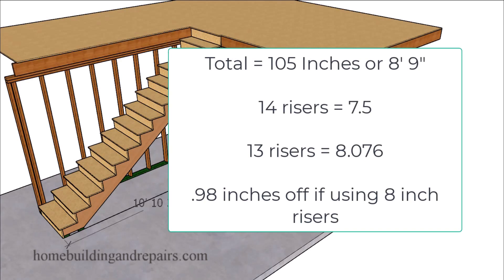I've had this happen to me plenty of times when I was building stairs for large track home builders who needed to make these measurements work even when they didn't. For those who understand enough math: if we multiply 0.076 times 13, we're going to end up with 0.98 — or almost one inch.